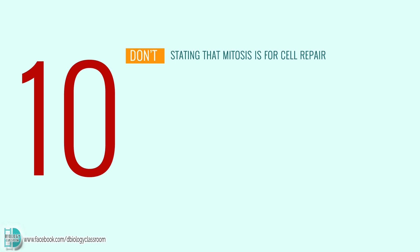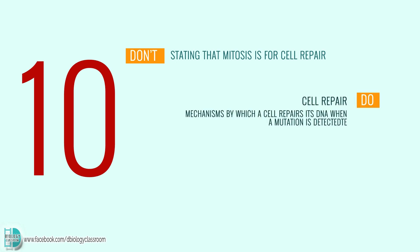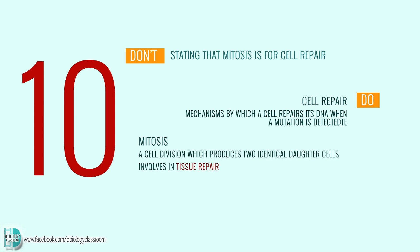Number 10: stating that mitosis is for cell repair. Cell repair refers to any of the several mechanisms by which a cell repairs its DNA when a mutation is detected. Mitosis is a cell division which produces two identical daughter cells. It is involved in tissue repair, where dead cells are replaced — this is not the same as cell repair.